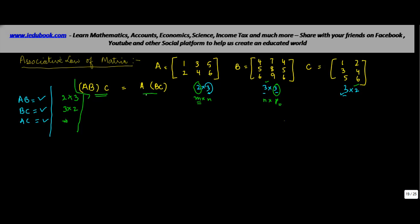Now, we need to prove that A, B into C is equal to A into B, C. So, let's first take the left-hand side. A, B is going to be A into B. We know that the order of A, B is 2 into 3. So, we are computing A, B. Let's start one by one. So, first row, first column. So, you'll have 1 into 4 plus 3 into 5 plus 5 into 6. This is going to be the first number.